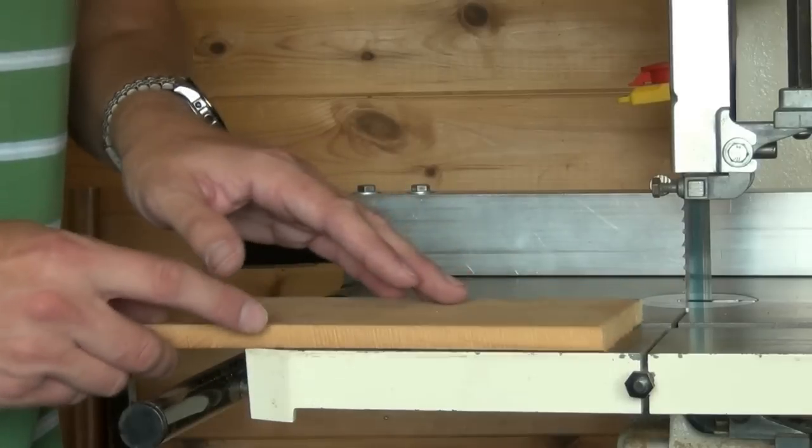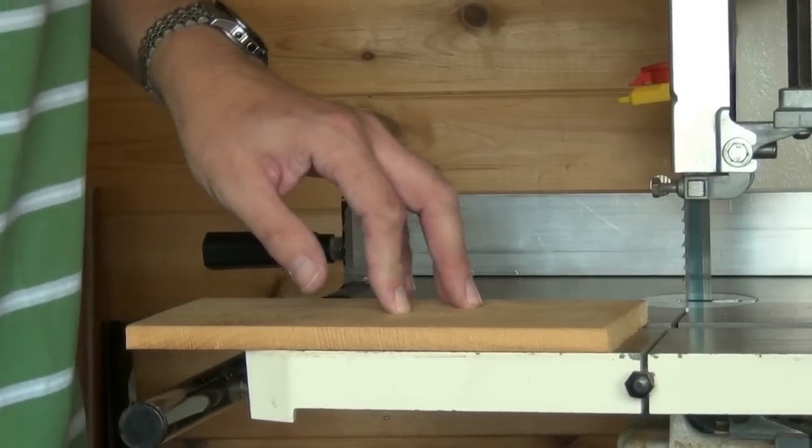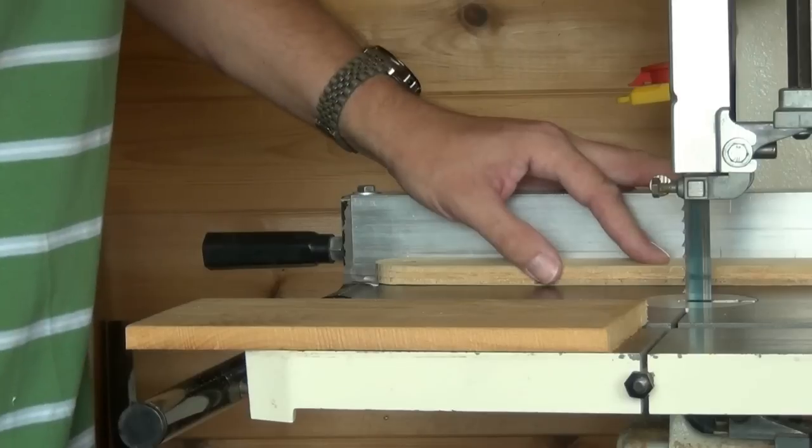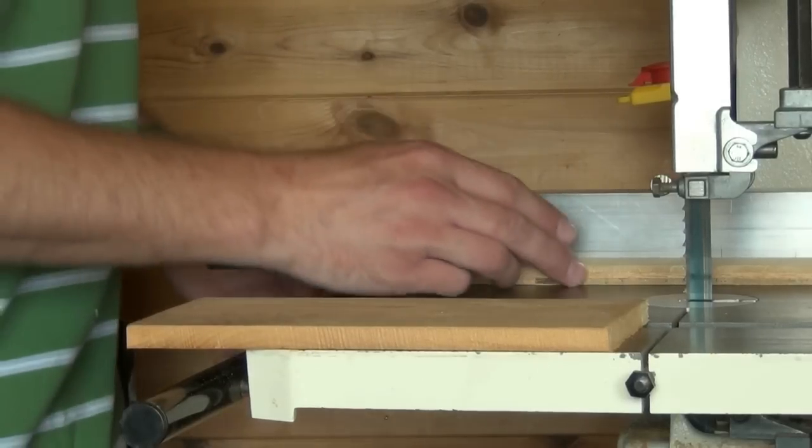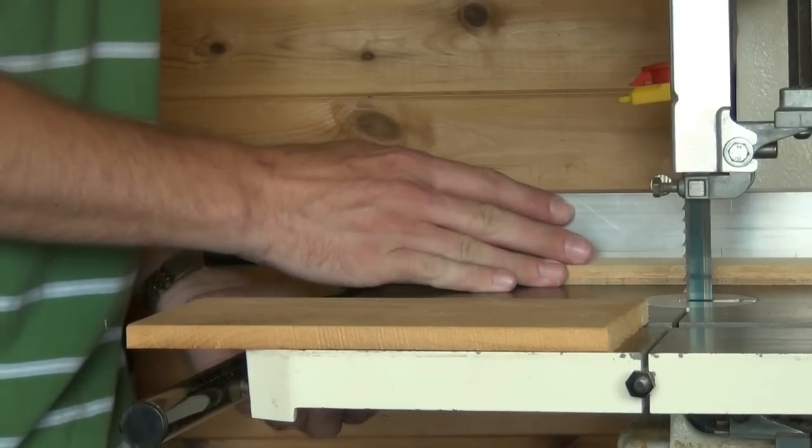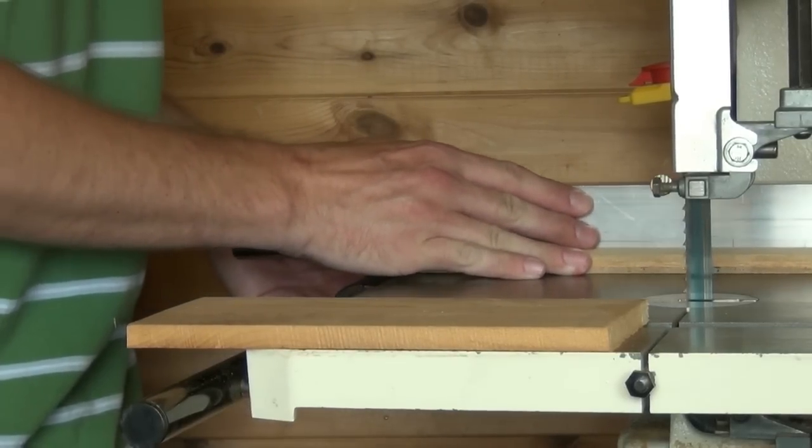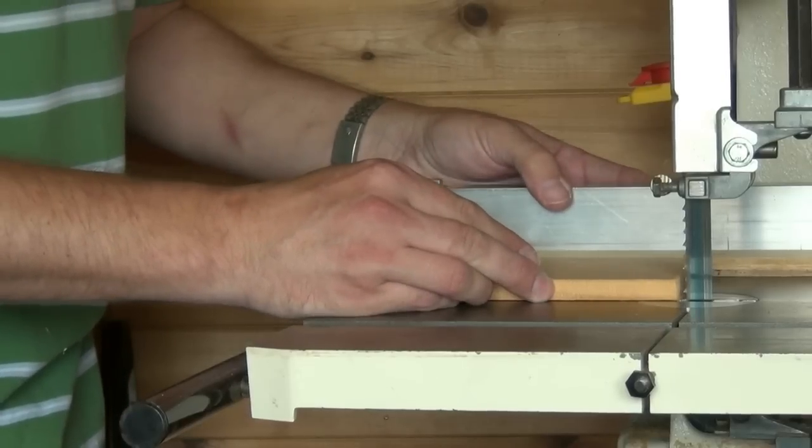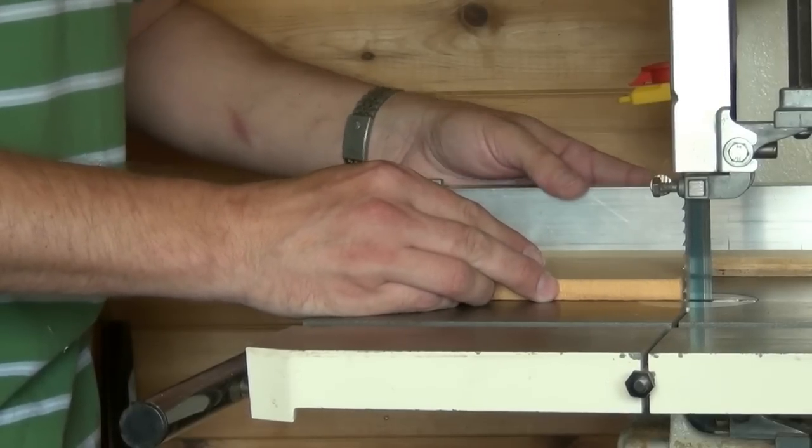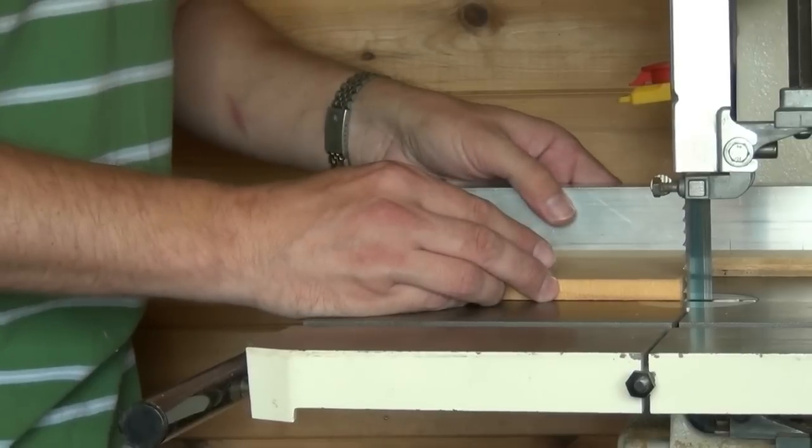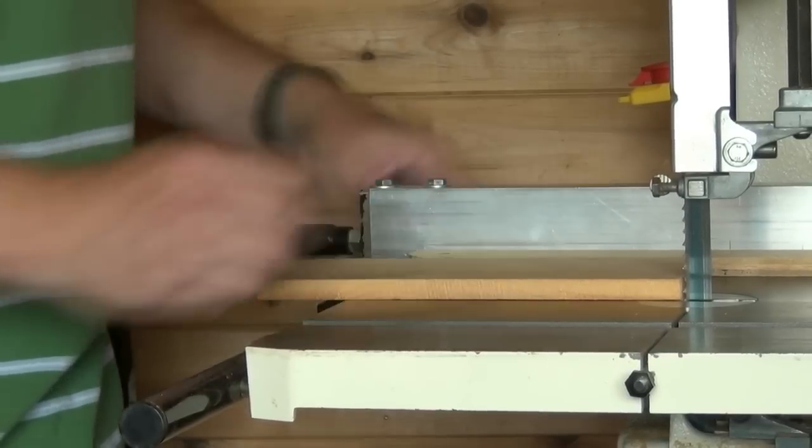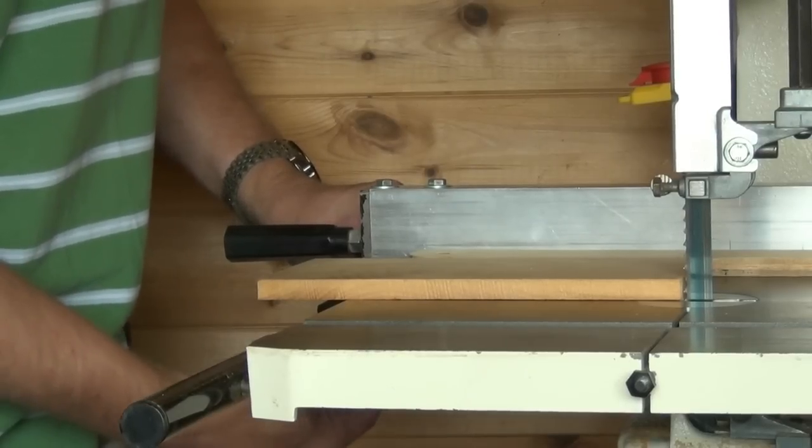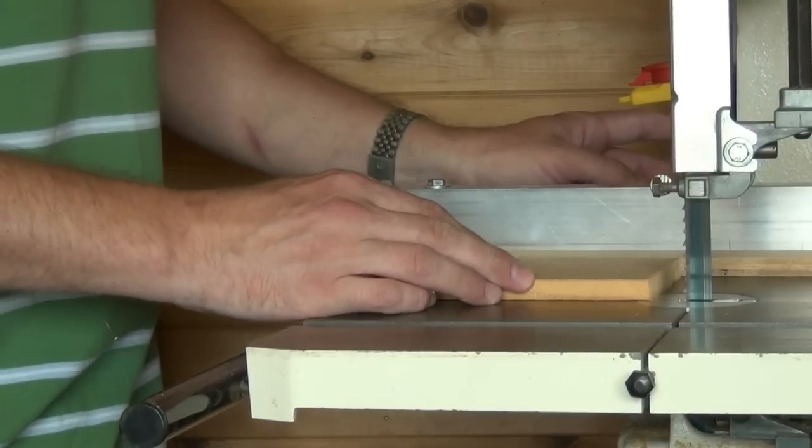But for more precision you can insert a parallel spacer next to your fence, move the fence further away, set up your work so that you're cutting shy of the line by perhaps a thirty-second, lock your fence, and take a cut.